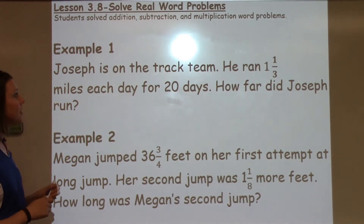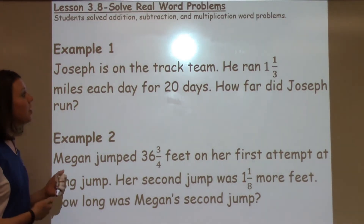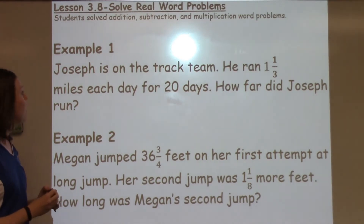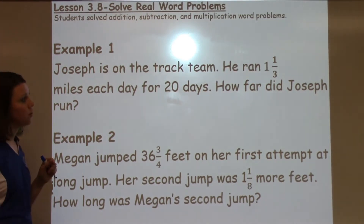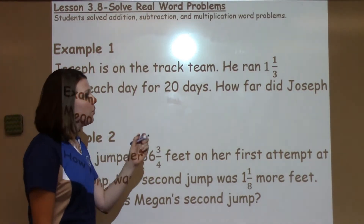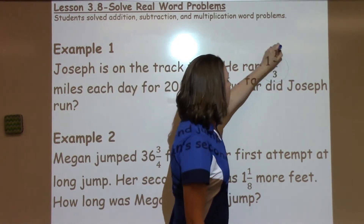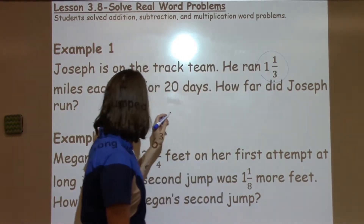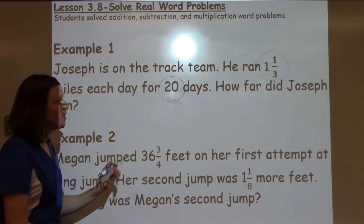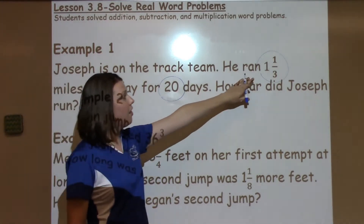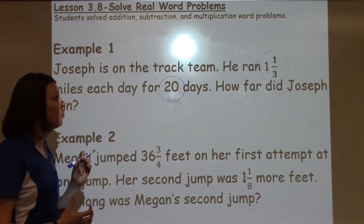In our first example, it says: Joseph was on the track team. He ran 1 and 1 third miles each day for 20 days. How far did Joseph run? So when I'm looking at this problem, I see I've got 1 and 1 third, and he went for 20 days. I know that he did this length for 20 days, so I need to multiply that by 20.